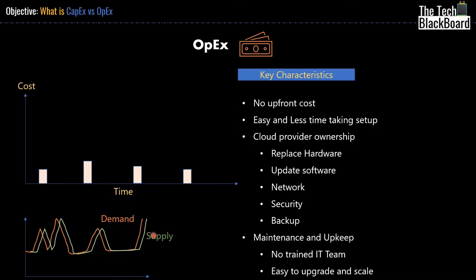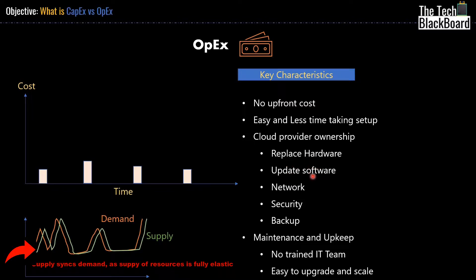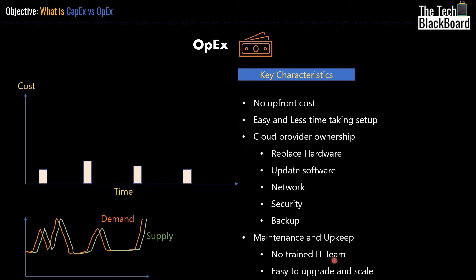On cloud, you can upscale and downscale your resources as per demand, keeping supply and demand in sync — making it fully elastic. Replacement of hardware, software updates, and setting up high-performance networks across geo-locations are all taken care of by the cloud provider. In some cases, backup is also built in. The cloud provider offers multiple ways to implement security — in fact, security is a built-in feature in almost all resources offered by cloud providers. You don't need a special IT team to maintain your infrastructure, and the cloud is highly scalable and easy to upgrade.